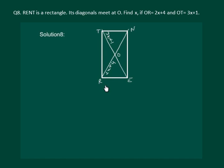We are given that RENT is a rectangle, which means the diagonals will be of equal length — that is, TE is equal to RN. Also, since a rectangle is a parallelogram, the diagonals will bisect each other. So half of RN, which is RO, will be equal to half of TE, which is TO.